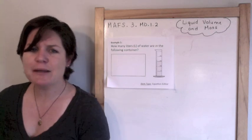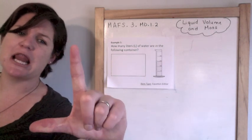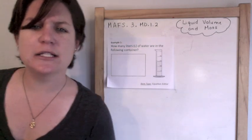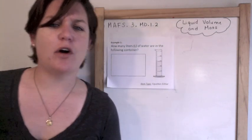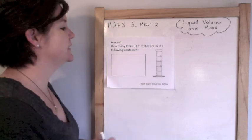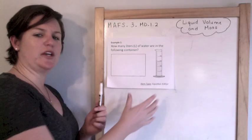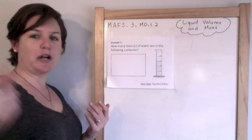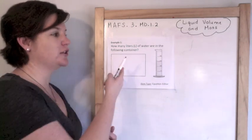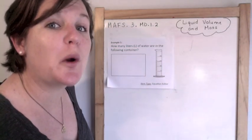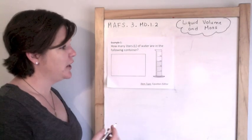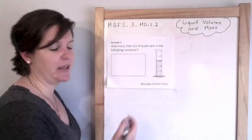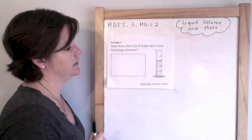Example 1: how many liters of water are in the following container? This is an equation editor item. I made this box humongous to try to trick you to do all your work in here, but don't do it. Just put your answer in there. You can't really see it, but this line is right here, and all of this is shaded in — it's water.